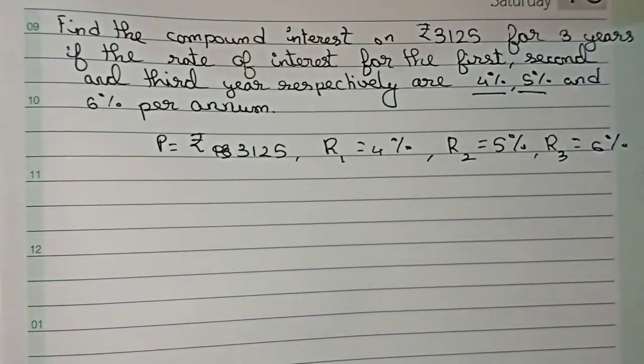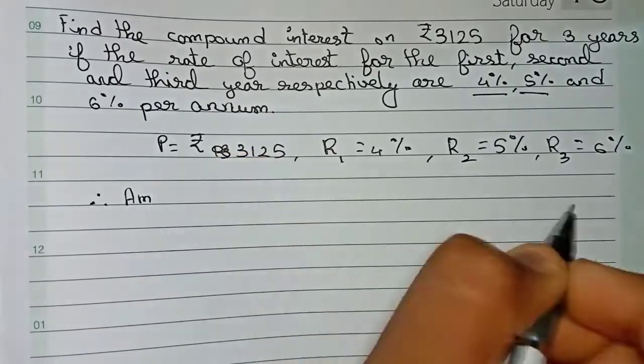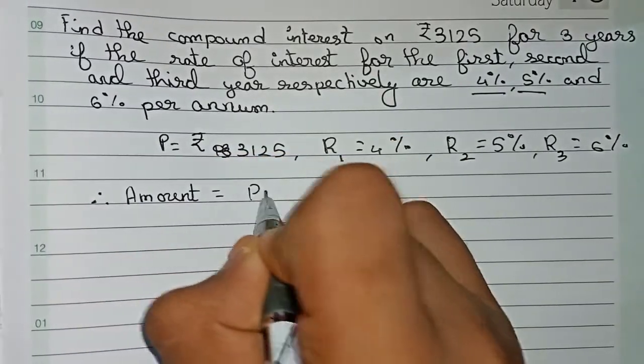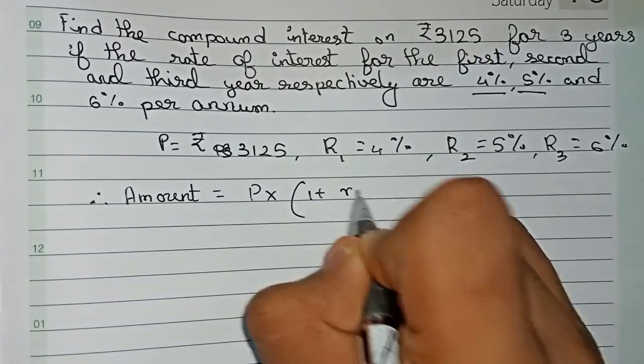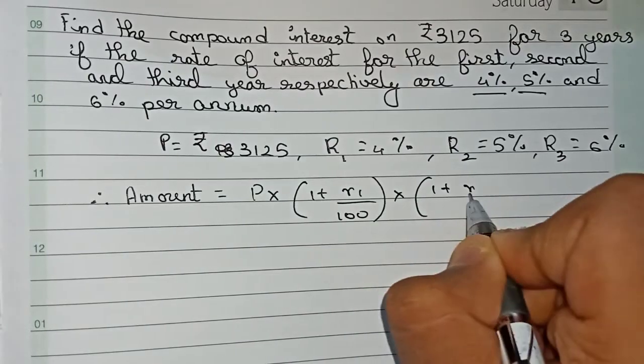In this question, time is not needed so I'm not writing it. Therefore, first we will find out the amount at the end of the third year. Amount is equal to principal into the formula: principal into (1 plus R1 by 100) into (1 plus R2 by 100) into (1 plus R3 by 100).